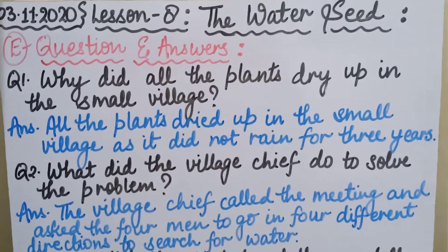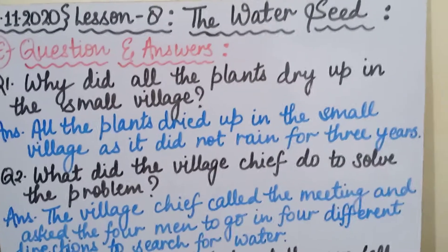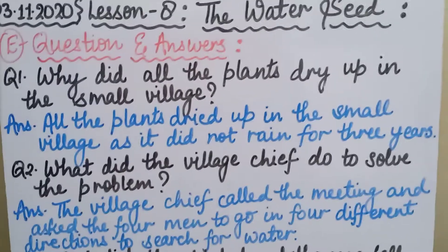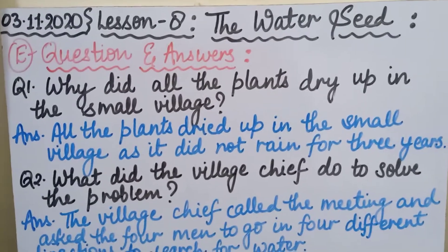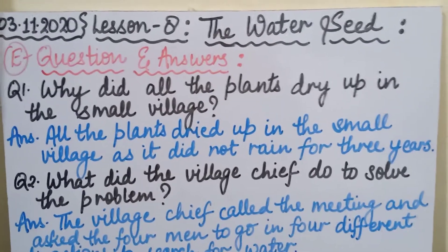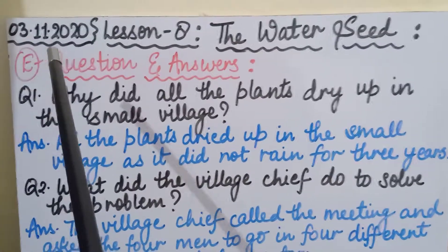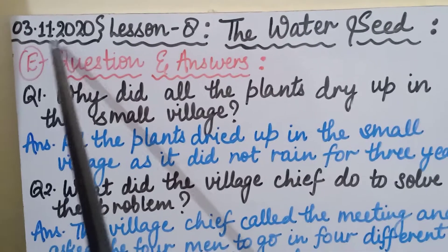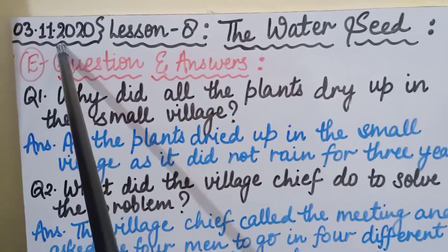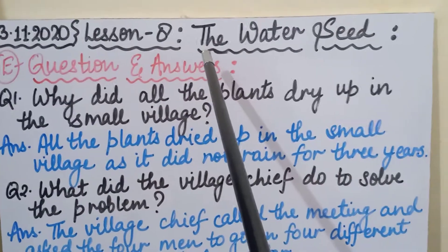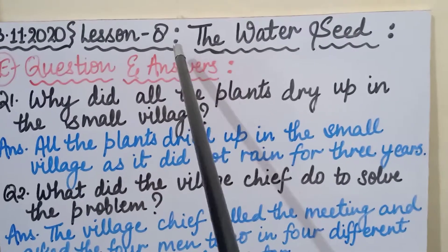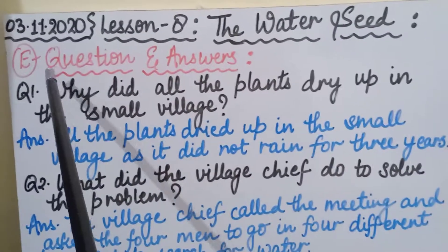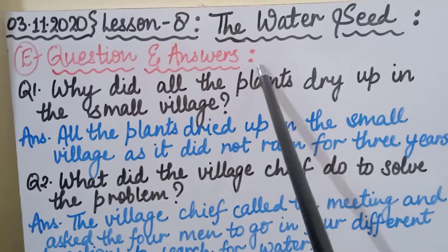So children, listen to this video very carefully because I will explain all the questions and all the answers. On a new fresh page of your English Literature notebook, you will write down today's date — 3-11-2020 — then give the heading: Lesson Number 8, The Water Seat. And in the next line, write the subheading: Part E, Question and Answers.